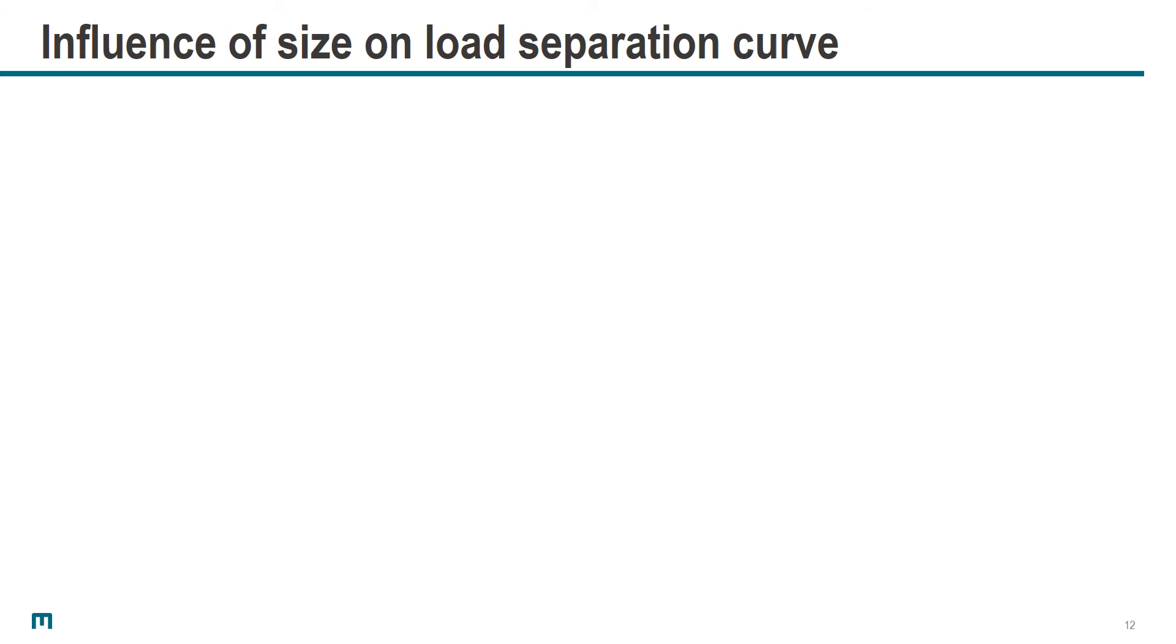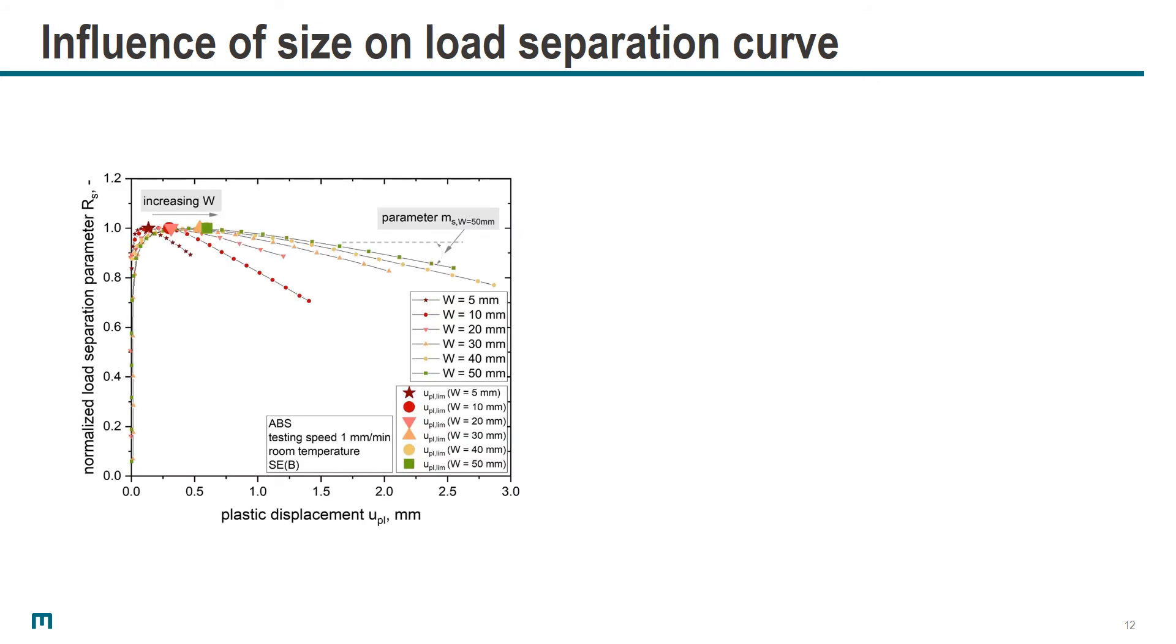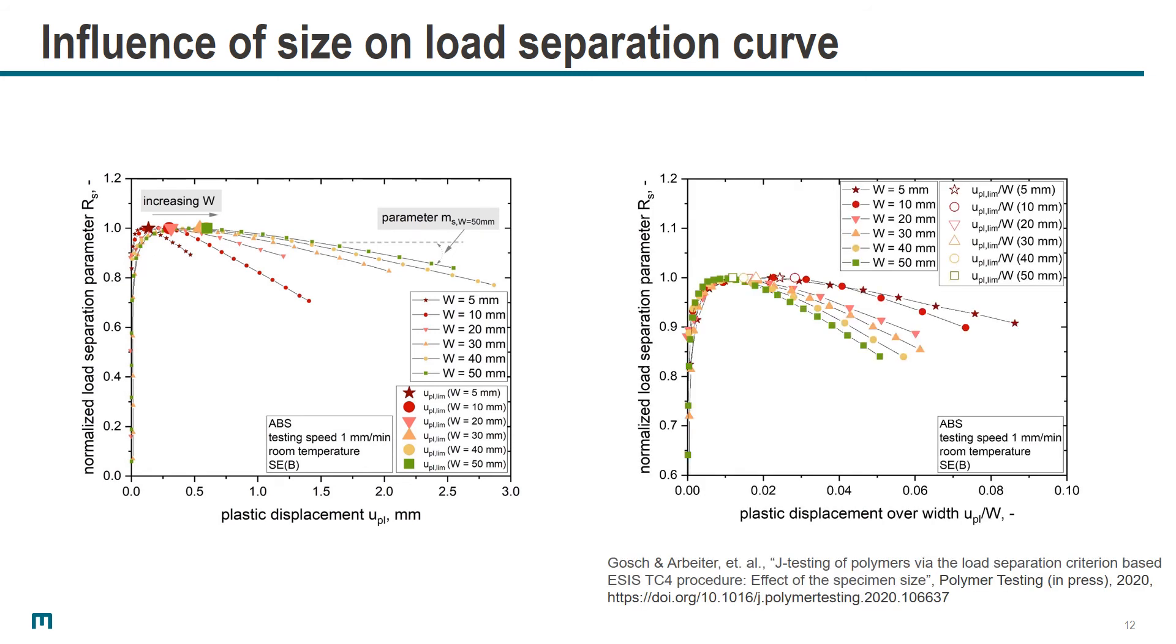Based on these load displacement graphs recorded for each individual test, we constructed the load separation curve for all sizes ranging from W5 to 50 and looked at both J_1 Lim values and the parameter MS. What we can see here already on the first graph is that clearly there are some differences between the J_1 Lim and MS values of different sizes. First, we thought maybe this is just a simple geometrical scaling issue. Therefore, we also looked at the parameters if we normalize the plastic displacement by the size of the specimen, as shown on the right-hand side with the displacement scaled with the dimension. But still, there are clear differences between the J_1 Lim and MS values of the individual tests.